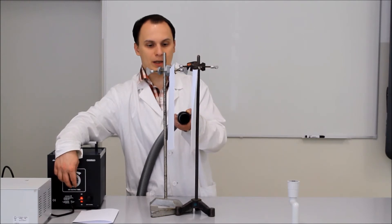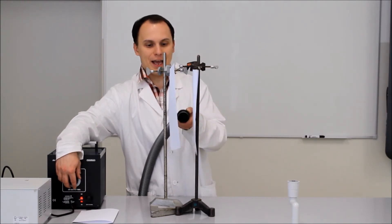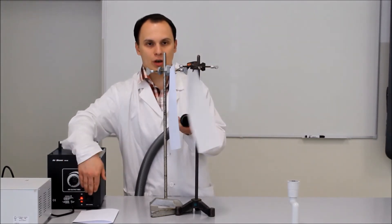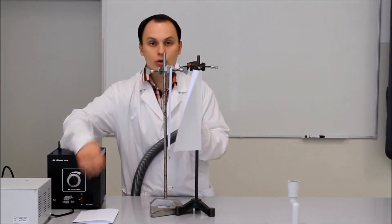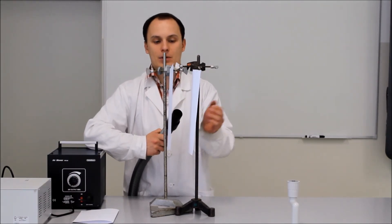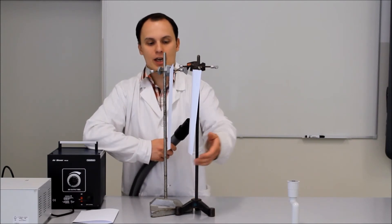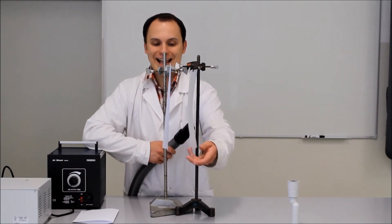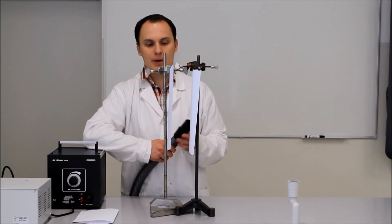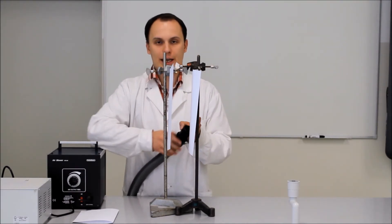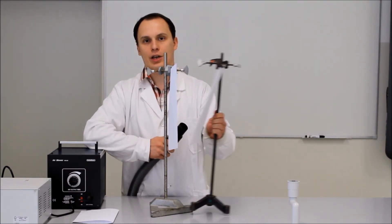És látható, hogy a két papírlap elkezd egymáshoz közeledni. Nagyon nagy már a légáramlás, hogy mindenféle örvényes áramlás keletkezik, és emiatt az utószél elkezd egy kicsit már lobogni a papírlap, de látható, hogy az elején a két lap közelített egymás felé.